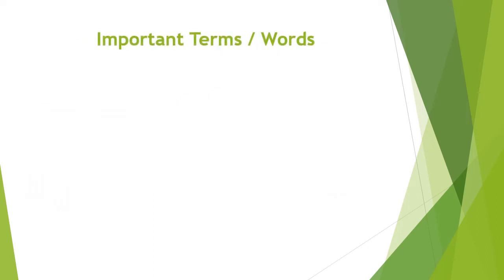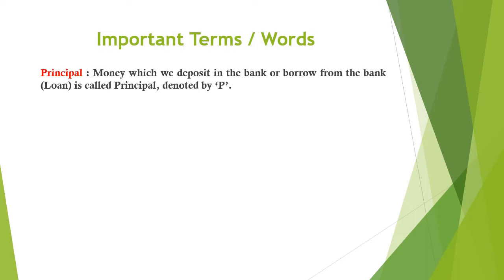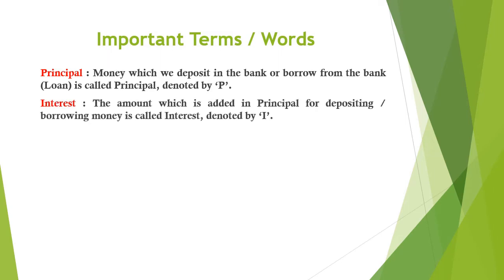Let's understand the important terms. Principal: the money which we deposit in the bank or borrow from the bank as a loan is called Principal, and it is denoted by P. Interest: the extra amount added to the principal — either the bank gives us extra on our savings deposit, or the bank charges us extra on the loan — that extra amount is called Interest, denoted by I.